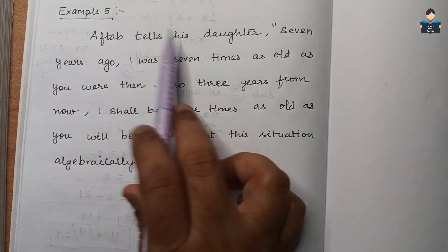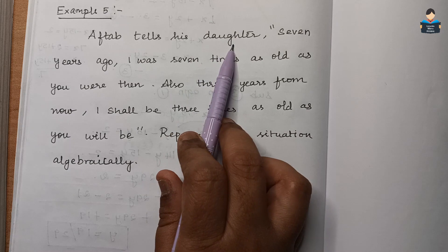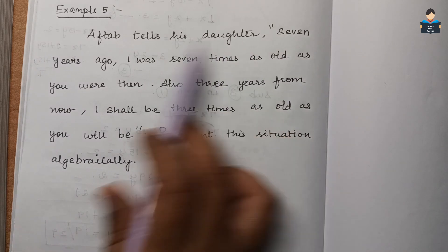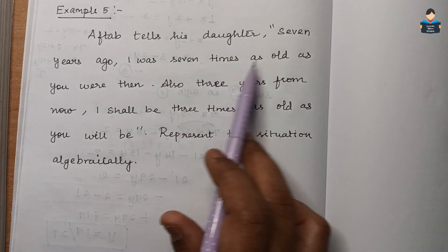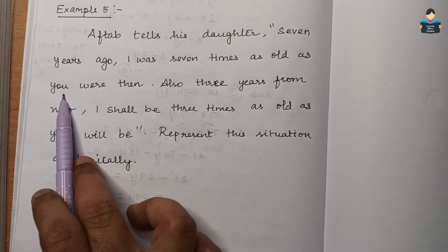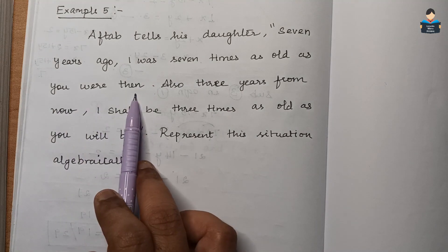Example 5: Aftab tells his daughter, '7 years ago I was 7 times as old as you were then.'